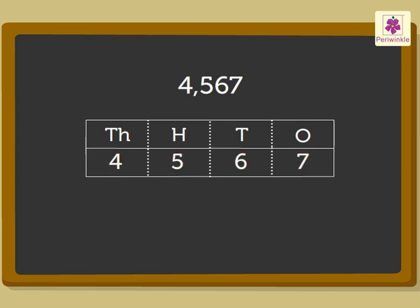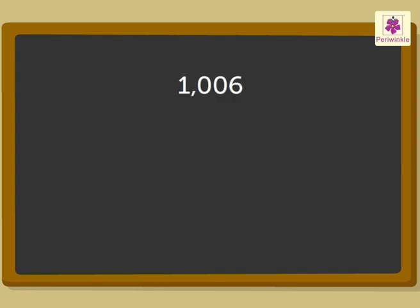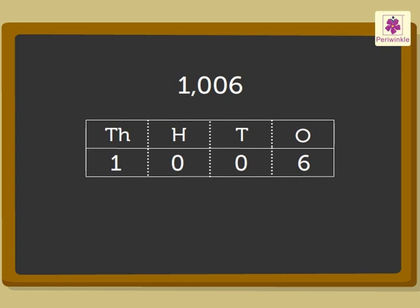We will try one more example. How will we read the number with the digits 1, 0, 0, 6? We read it as one thousand, six.